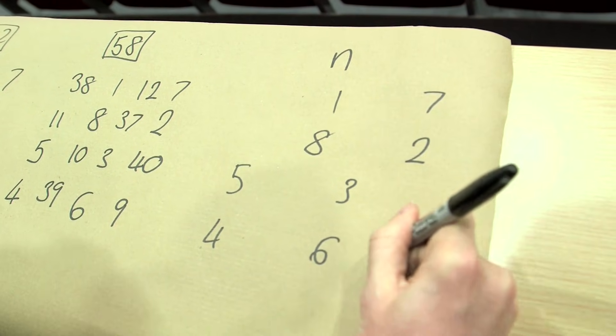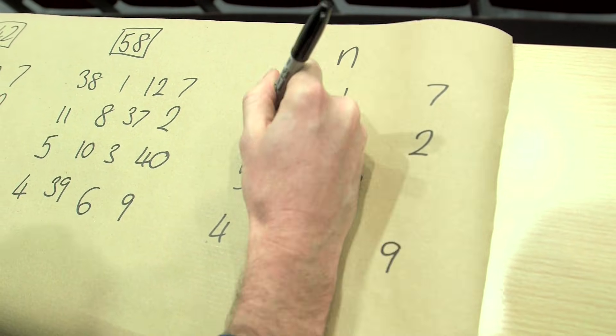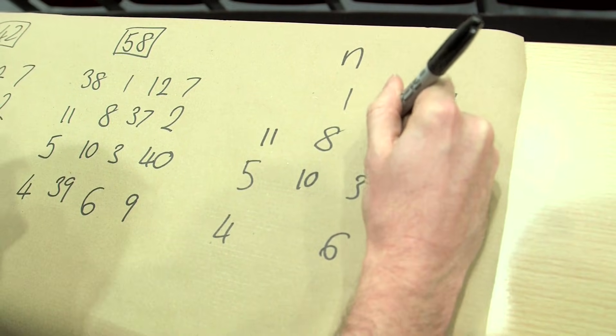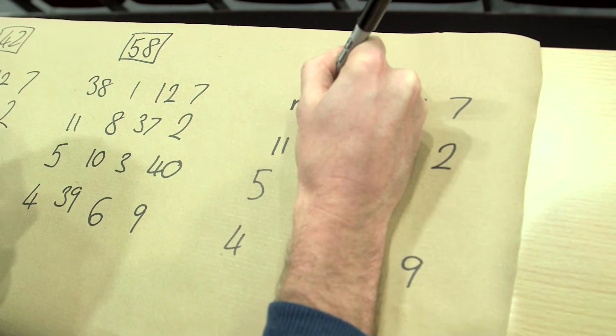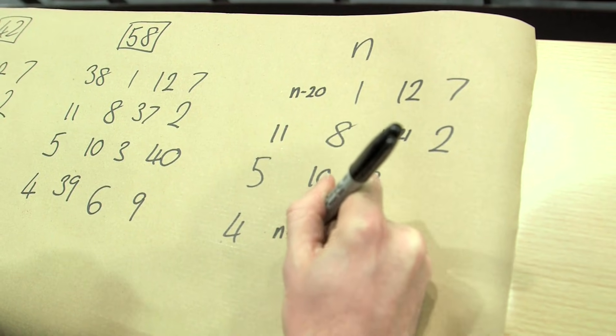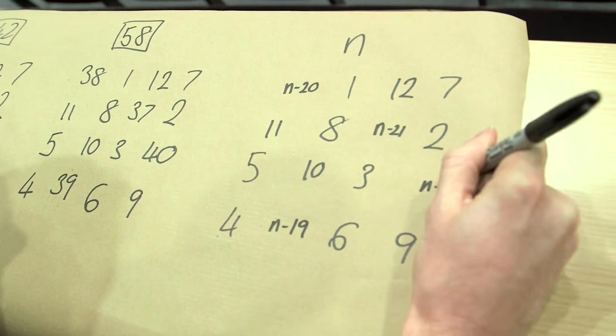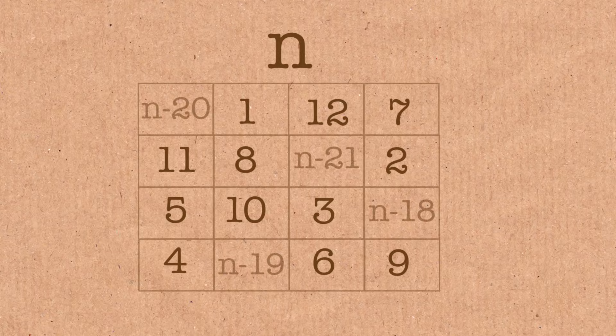Then I remember I put nine down there, ten, eleven, twelve. And then I do N minus twenty-one, I do N minus twenty, I do N minus nineteen, and I do N minus eighteen. And that is a magic square.